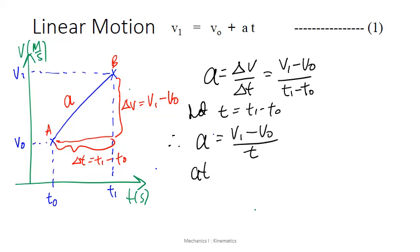Bring the T up, we will get aT equals V1 minus V0. And by shifting or rearranging, we will have V1 equals V0 plus aT. There you have it, the first formula of the kinematics equation.